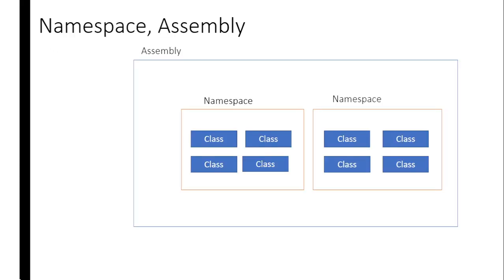As the classes grow in your application, you may need a way to organize your classes according to functionality. We use a namespace for this. A namespace is a container that has a set of related classes. You can have more than one namespace — for example, in the .NET framework you can have a namespace responsible for database operations, one responsible for security, and many more. You can also group your namespaces into an assembly. An assembly is a container that holds a set of related namespaces, and your application can have one or more assemblies.